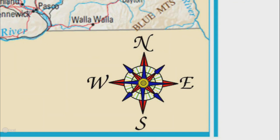This is a compass rose. It shows the directions north, south, east, and west on the map.